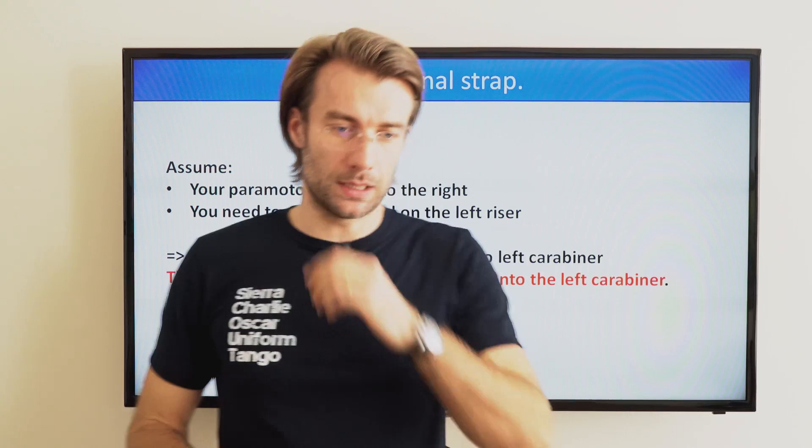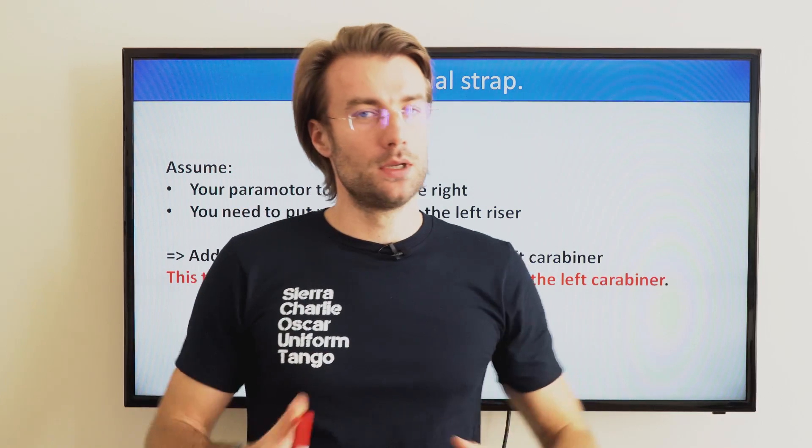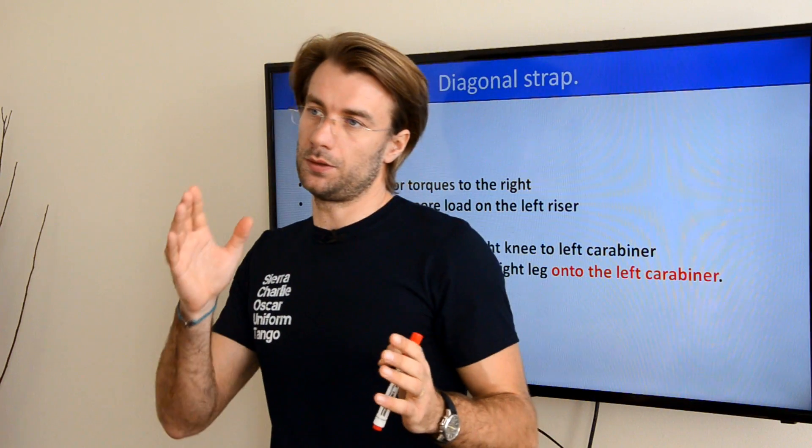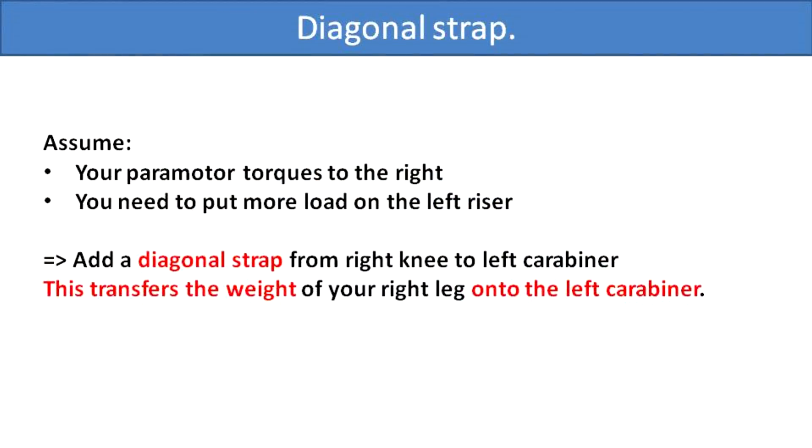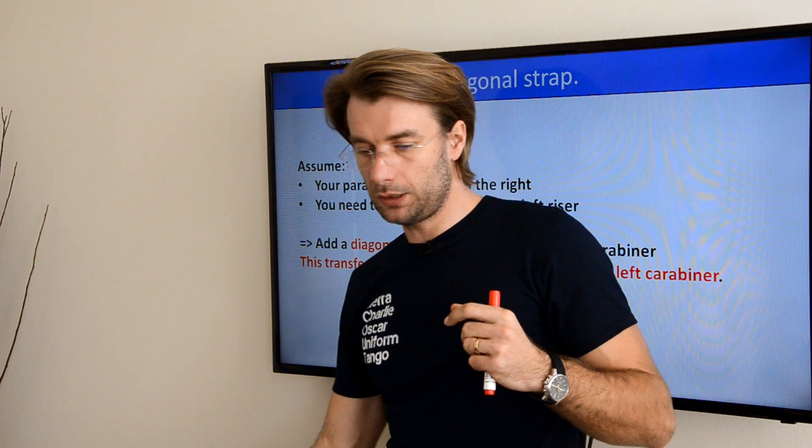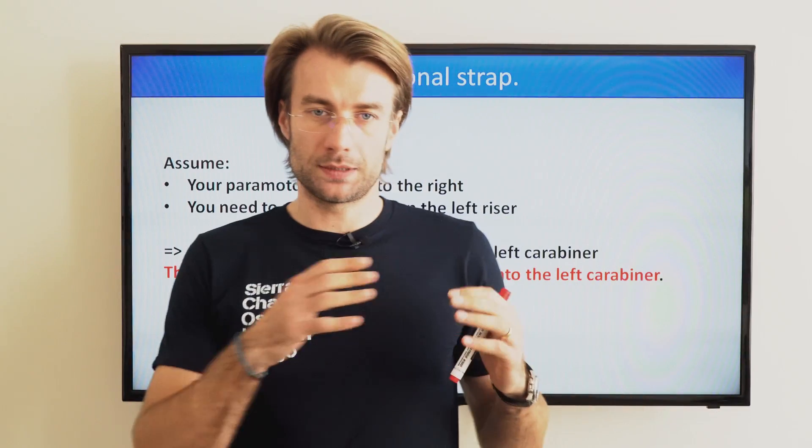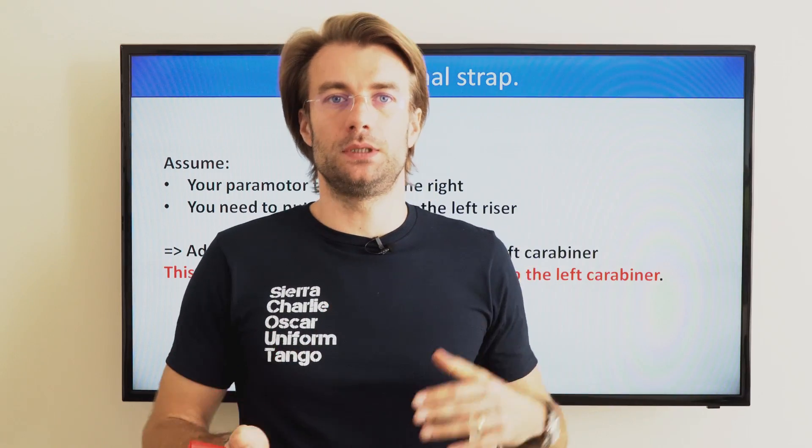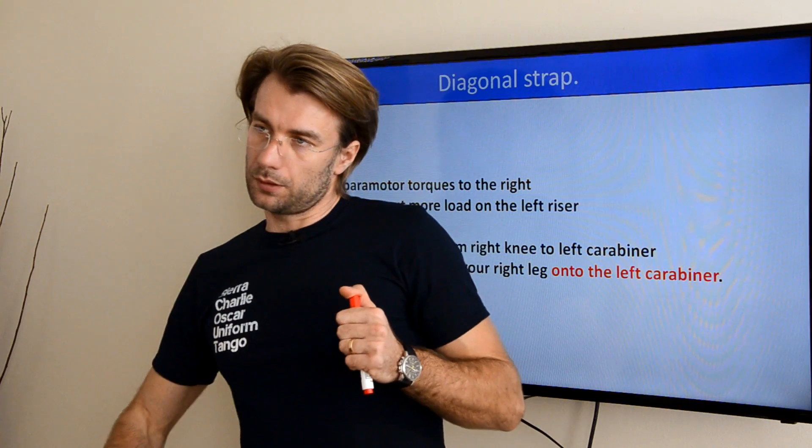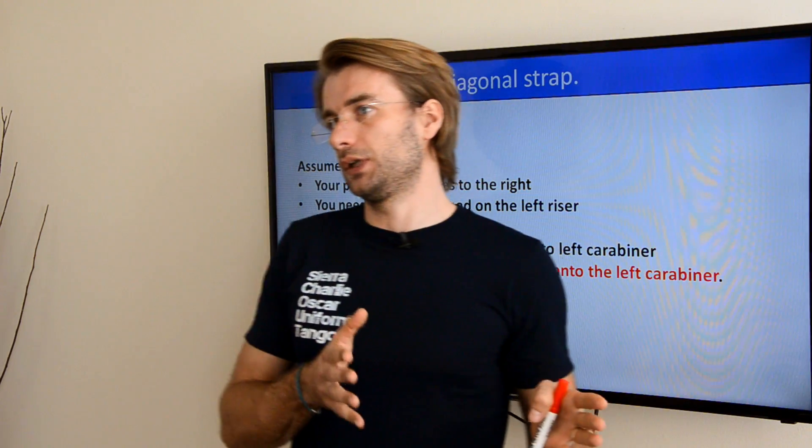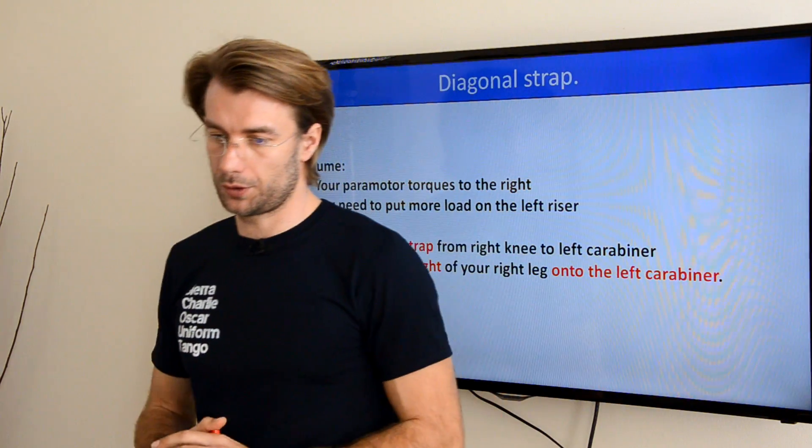There is a solution for that and that solution is a diagonal strap. Super simple, super easy, and it works pretty well. Let's assume the paramotor is torquing to the right. In that case a diagonal strap that goes from your right leg, your right knee to the left carabiner would transfer the weight of your right leg onto the left carabiner, effectively weight shifting to the left. This strap is adjustable so you can adjust the amount of weight transferred to the left side based on how much torque you're facing.